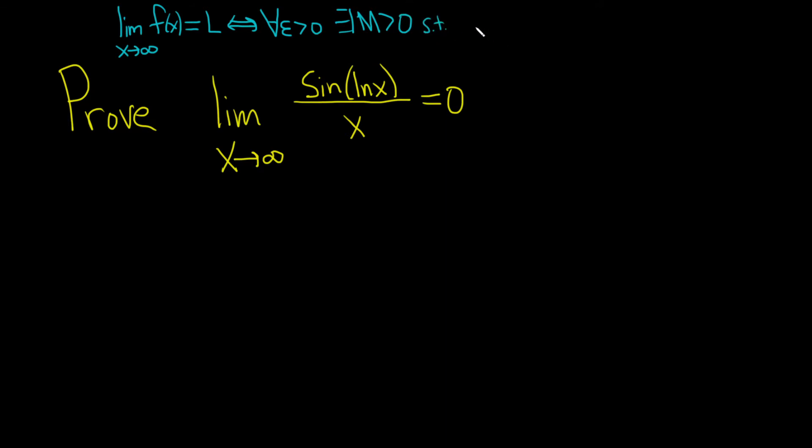for all real numbers x greater than M, we can make the distance between f of x and L small. In other words, f of x gets close to L. So on the real number line we tend to use the absolute value function for our distance function. So the distance between f of x and L, in other words, the absolute value of f of x minus L is less than epsilon. So that's the mathematical definition that we're going to use in this problem to do this proof.